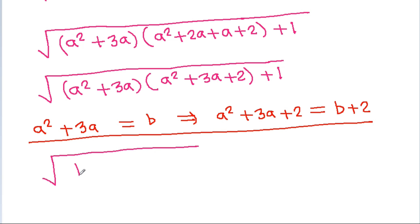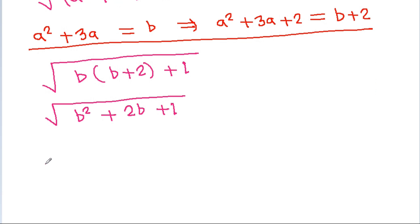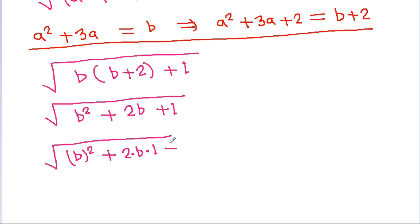So under the square root, b times b is b squared, plus b times 2 is 2b, plus 1 is 1 squared. So we have b squared plus 2b plus 1.